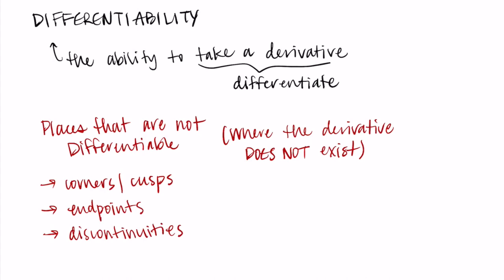All this to say, we just want to be aware that when we take a derivative, there may be points where the derivative does not exist. We need to be thinking about these and not trying to find tangent lines where the derivative doesn't exist, or make any conclusions at points that are not differentiable. That's it for this video — thanks for watching and I'll talk to you in the next one.